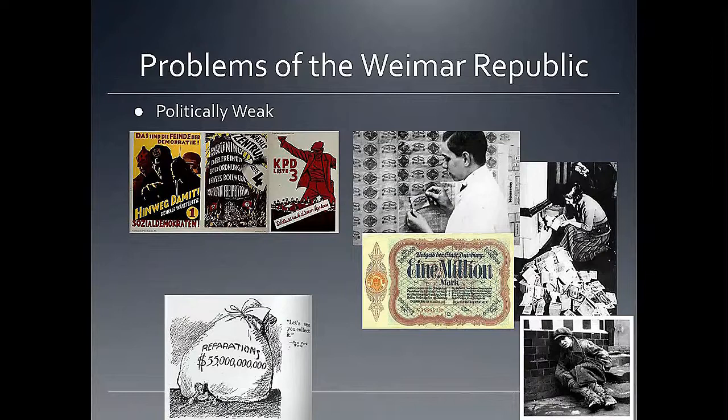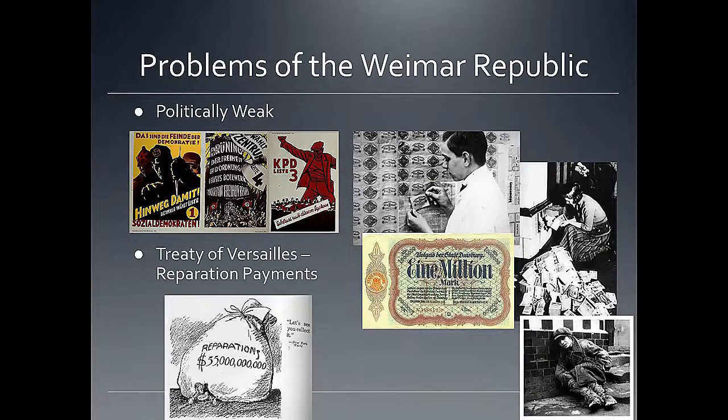The Weimar Republic was also blamed for the Treaty of Versailles, particularly the reparation payments. They didn't really have a choice in the matter, but still received blame from the German people. The burden of paying back reparations to the Allies — the British and the French — weighed heavily on the German government and economy.